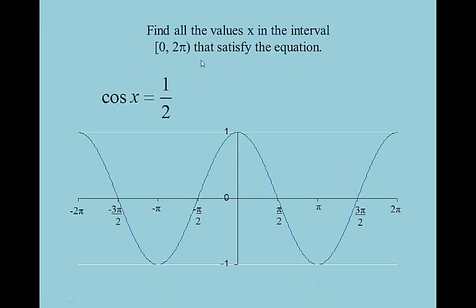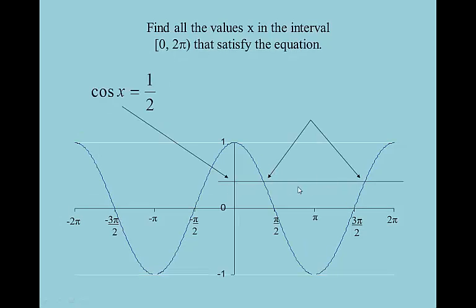Find all values of x in the interval [0, 2π] that satisfy the equation cosine x = 1/2. We're only looking between 0 and 2π where cosine x equals one half. If I draw a line straight across at y = 1/2, we notice it intersects the cosine curve at two places. It turns out the first answer is 60 degrees, or π/3, because the cosine of π/3 is 1/2. Cosine is positive in quadrants 1 and 4, so I need the 60-degree angle in quadrant 4 as well, which is 5π/3. My two answers are π/3 and 5π/3.